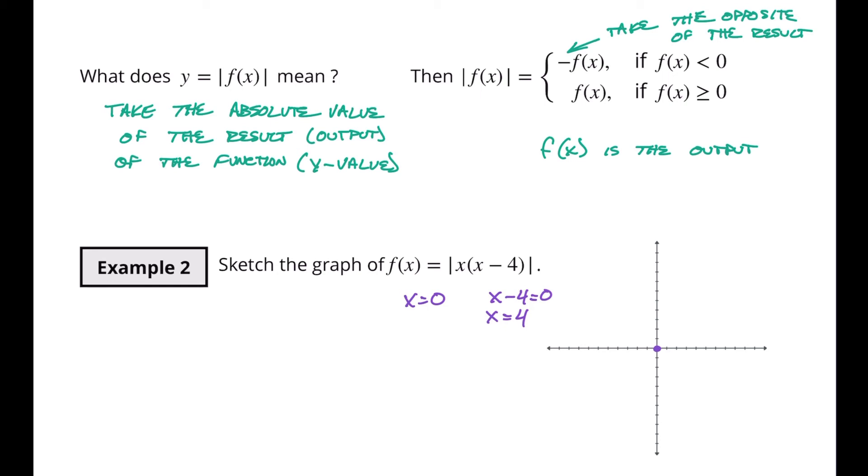We're basically looking at these two values here for our X intercepts. Now it's always helpful to find a third point with your quadratic. We know that without the absolute value this is going to be opening upwards. But we need to know where the middle is. The middle is always in between our X intercepts so it's going to be at X equals two.